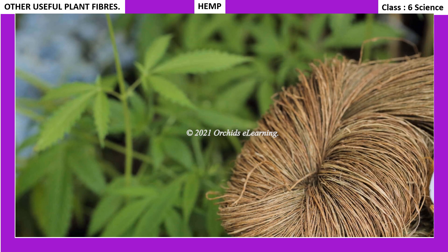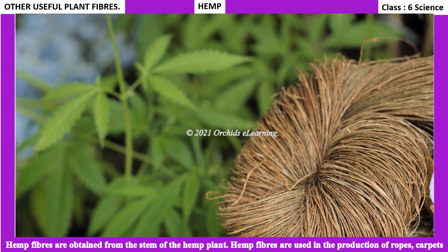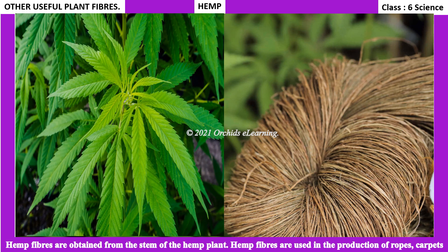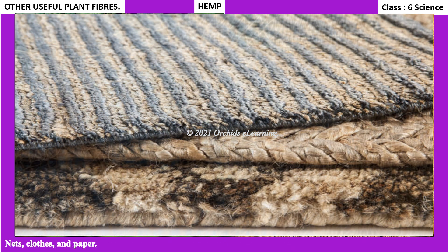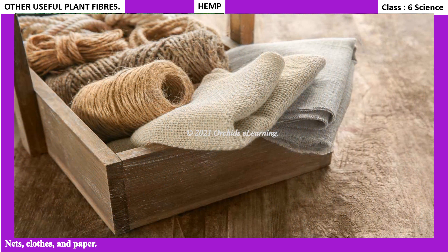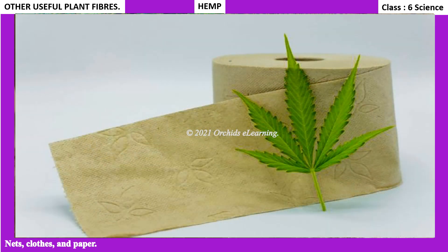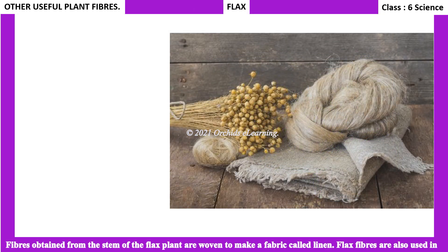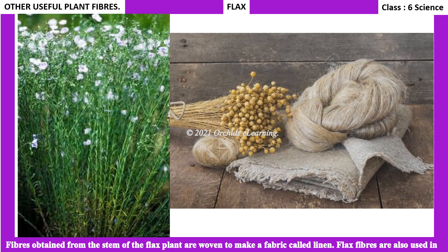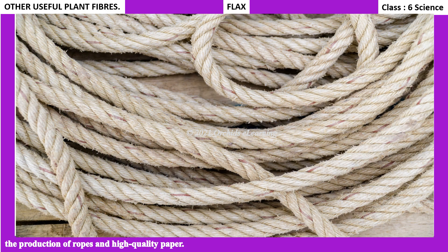Hemp fibers are obtained from the stem of the hemp plant and are used in the production of ropes, carpets, nets, clothes, and paper. Flax fibers, obtained from the stem of the flax plant, are woven to make a fabric called linen. Flax fibers are also used in the production of ropes and high-quality paper.